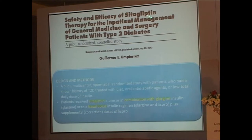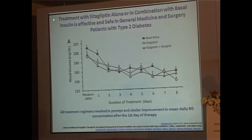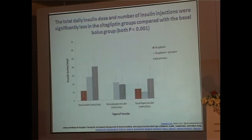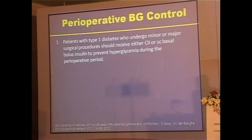A study by Umpierrez and Pérez added sitagliptin to inpatient management of general medicine and surgery patients with type 2 diabetes. They received sitagliptin with glargine versus a basal-bolus regimen, and found that sitagliptin combined with basal insulin was as effective — the number of insulin doses came down. You don't have to use a full basal-bolus protocol; just give basal insulin plus sitagliptin and achieve the same result.